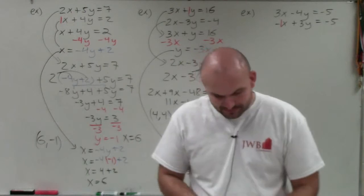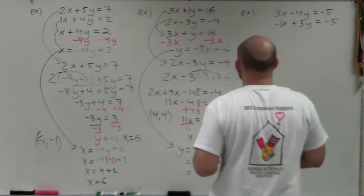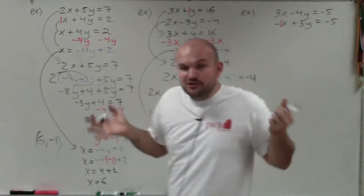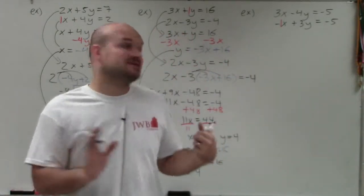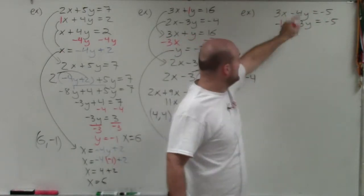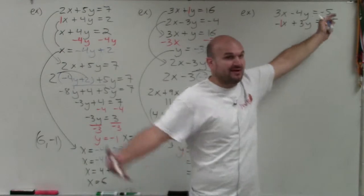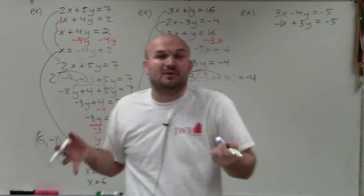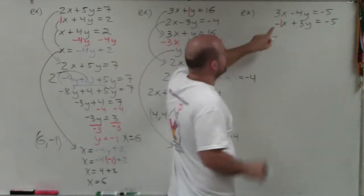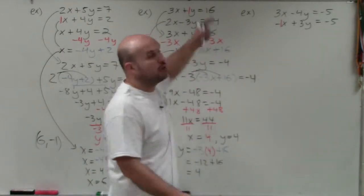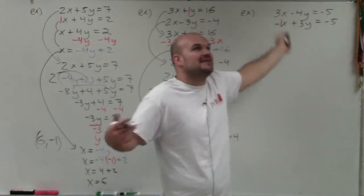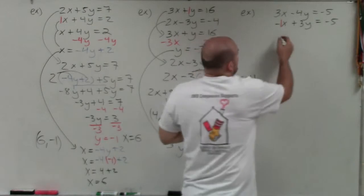Now for the last example. You don't see a coefficient of positive 1, but there is a negative 1. You can solve for any variable in substitution — you'll get the same answer either way — but it depends on how much work you want to do and how many fractions you want to deal with. That's why I like to stick with variables that have a coefficient of 1 or negative 1. Here, the coefficient of negative 1 is the easiest one to solve for.